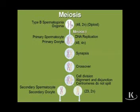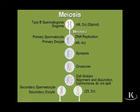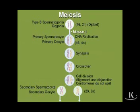But then some of those daughter cells will enter the meiotic process, and in doing so, change their name to primary spermatocytes or primary oocytes. So once they become meiotically active instead of mitotically active, they change their name to primary spermatocyte or primary oocyte.